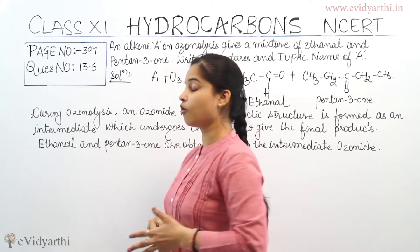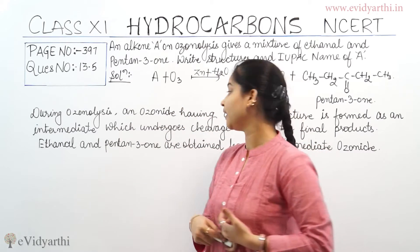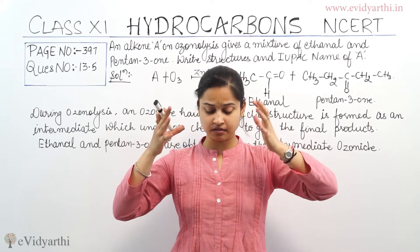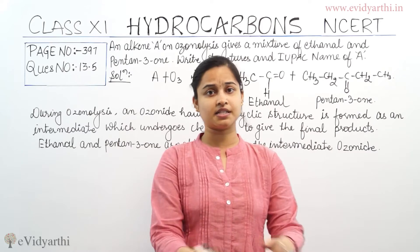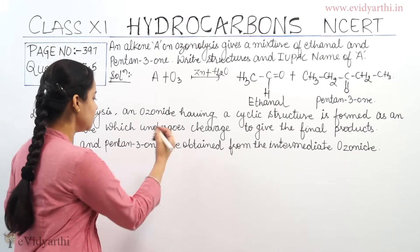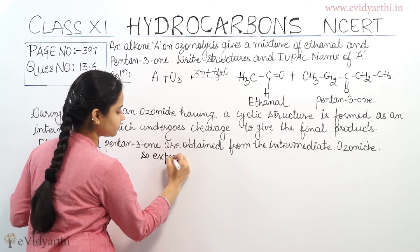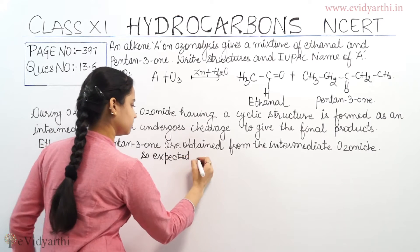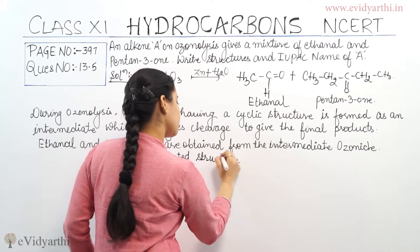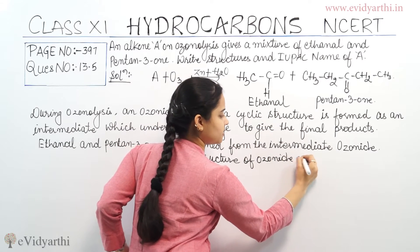And the final products in this question are ethanal and pentan-3-one. So what can we deduce from pentan-3-one and ethanal? We can figure out what the expected structure of the ozonide should be. So the expected structure of the ozonide is what we need to work out.